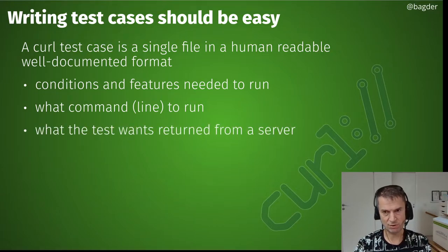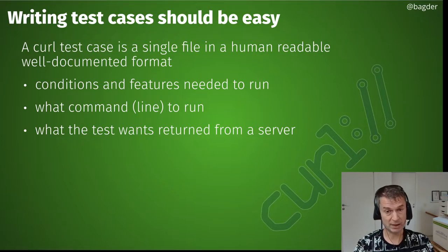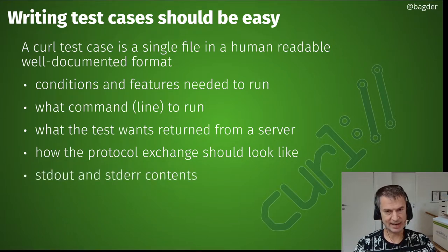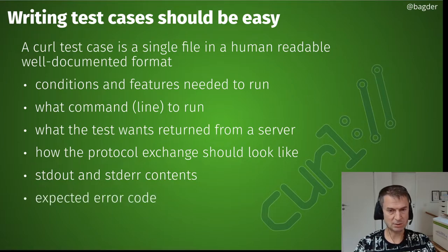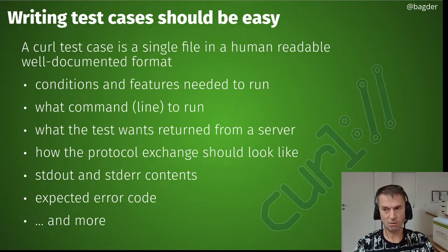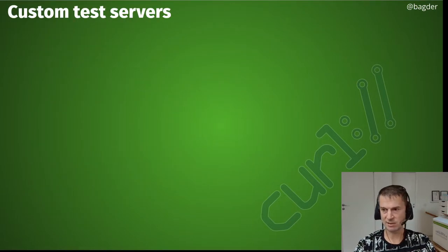We specify what exactly the server should return, and we check that curl receives exactly that from the server — byte per byte, every time. That verifies the protocol exchange is exactly correct, so whatever change we make, the protocol exchange remains intact. We also check standard out and standard error contents and expected error codes, verifying that curl detects errors properly. There's a wide variety of optional things you can specify in a test case.